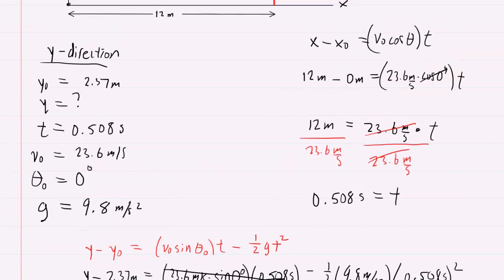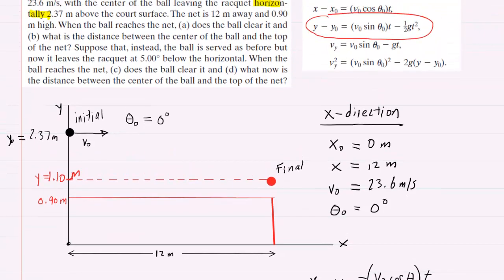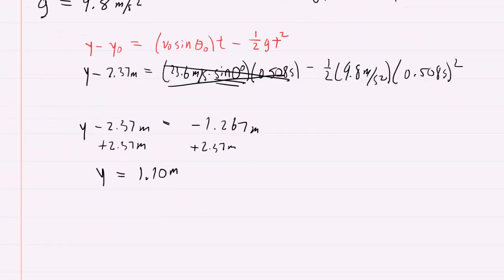Going back to the diagram, we now know the ball is at 1.10 meters when it reaches the net, and indeed that is above the net — the net is only 0.9 meters above the ground. So the answer to part A is yes, the ball clears the net. For part B, the distance between the ball and the top of the net is 1.10 meters minus 0.9 meters, giving delta y equal to 0.20 meters.